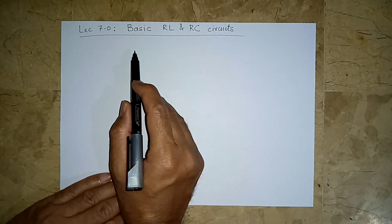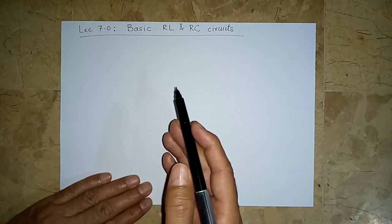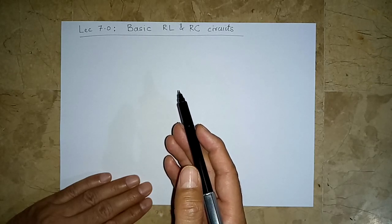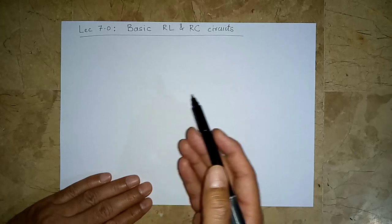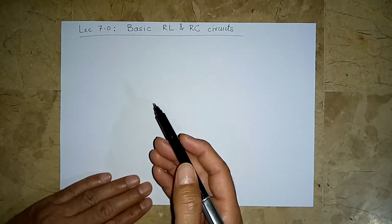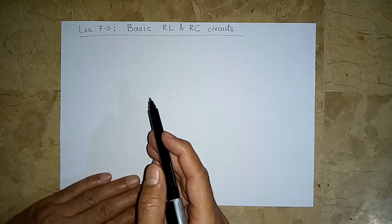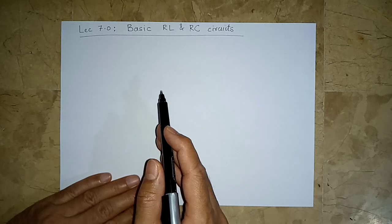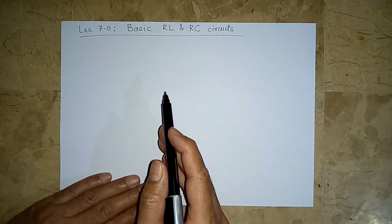Rather than using a complicated circuit to learn something new — that is not going to work. Basic RL and RC circuits are used quite often in electrical engineering: in amplifiers, feedback systems, control systems, operational amplifiers, and communication equipment. So it's necessary to understand how they work. You should pay very close attention because the assignment based on these RL and RC circuits is going to be a very interesting one.